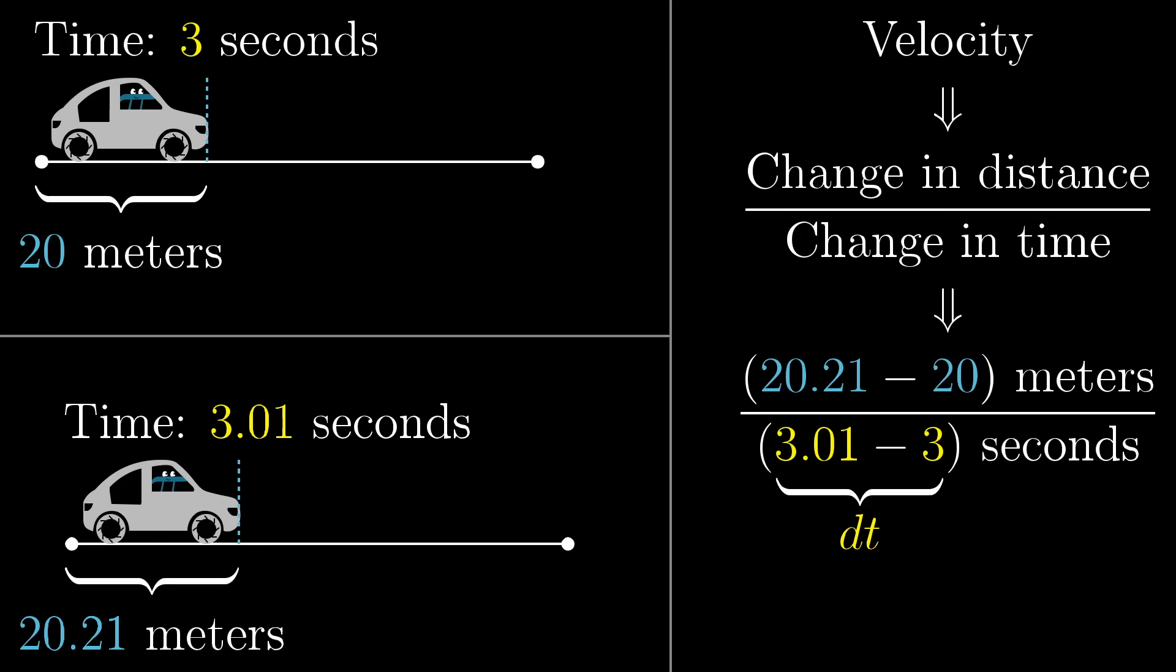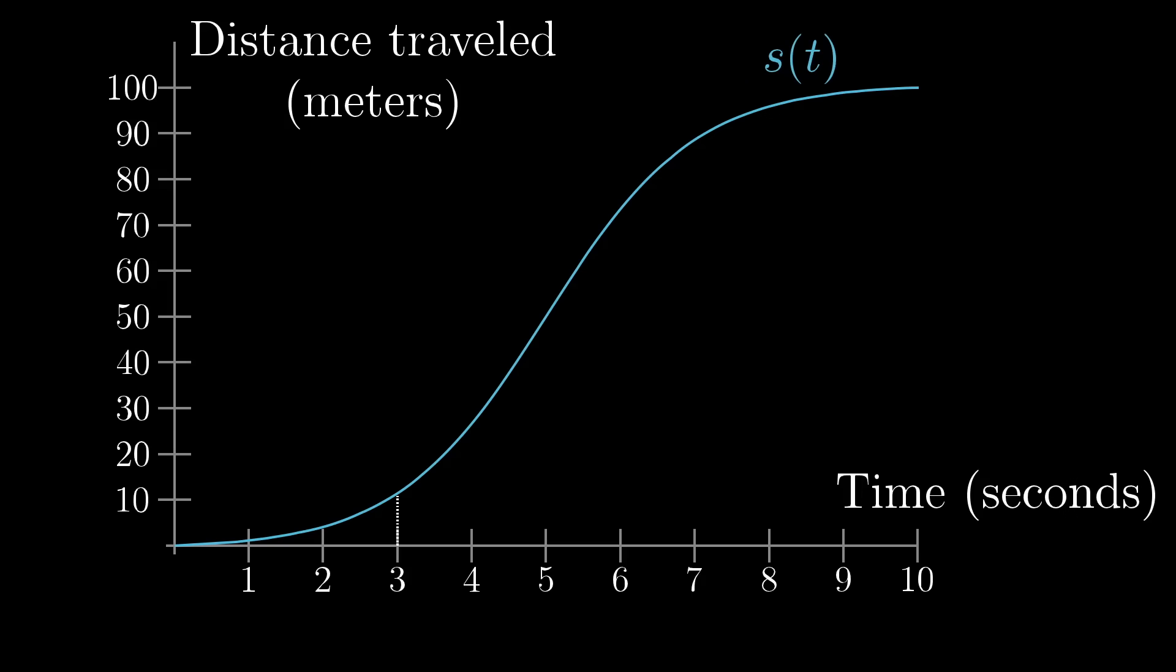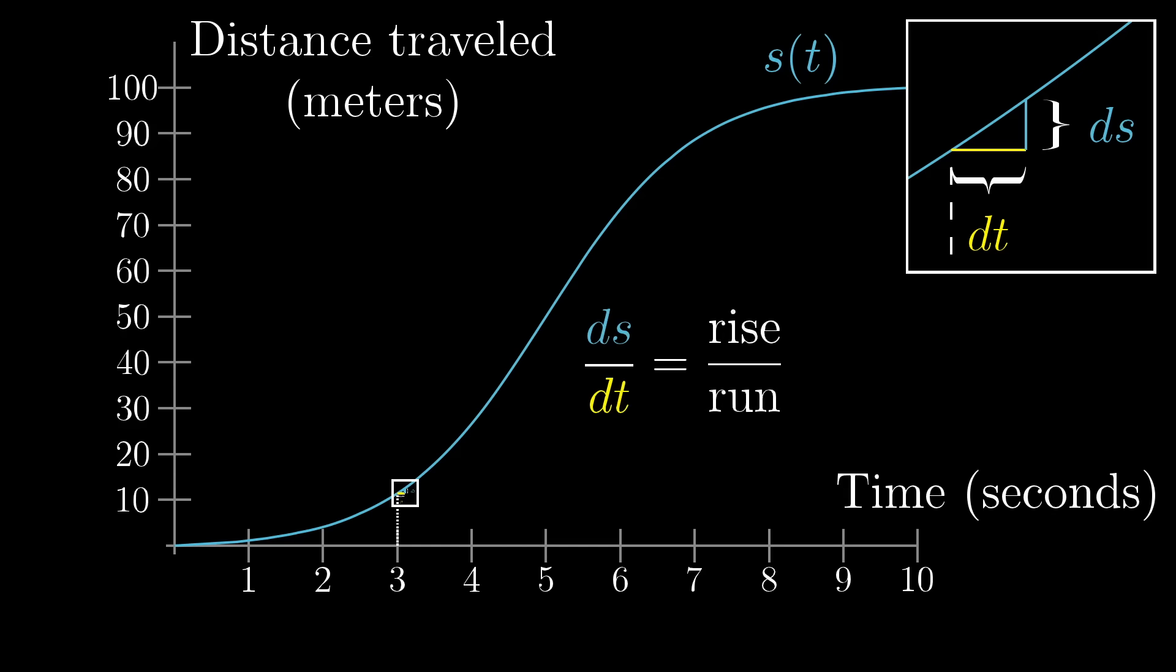So let's call that difference in time dt, which you might think of in this case as 0.01 seconds. And let's call that resulting difference in distance ds. So the velocity at some point in time is ds divided by dt: the tiny change in distance over the tiny change in time. Graphically, you can imagine zooming in on some point of this distance vs. time graph above t equals 3. That dt is a small step to the right, since time is on the horizontal axis. And that ds is the resulting change in the height of the graph, since the vertical axis represents the distance traveled. So ds divided by dt is something you can think of as the rise over run slope between two very close points on this graph.